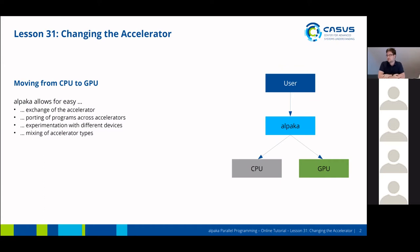ALPAKA allows for an easy exchange of the accelerator. This allows you to easily port programs across different accelerators and device types, and also to experiment with different devices present in your system. Later today you will also be able to mix different accelerator types, using CPUs and GPUs in parallel, for example.